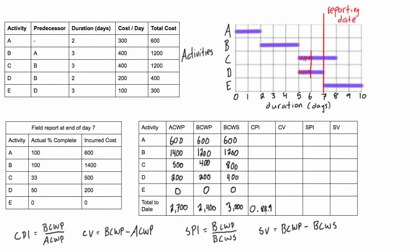Cost variance (CV) equals BCWP minus ACWP: 2,400 minus 2,700 gives a value of negative $300. A negative cost variance means the project is over budget. We can see this directly — the actual cost of work performed is $2,700 but the budgeted cost of work performed is $2,400, so we paid $300 more than expected for the work completed.